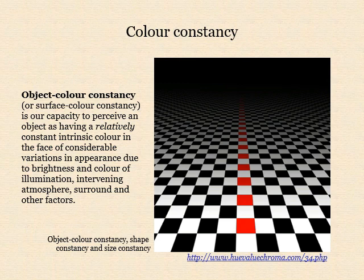Object colour constancy is thus comparable to other perceptual constancies, including shape constancy and size constancy — our ability to instantly perceive an object as having a constant intrinsic shape and size despite variations in appearance due to viewpoint.